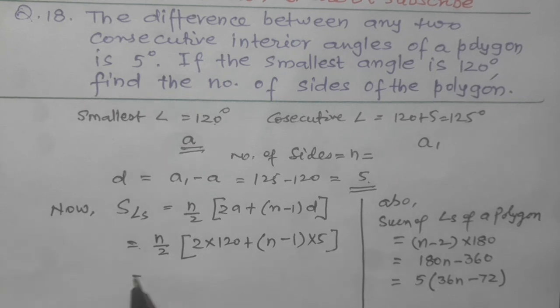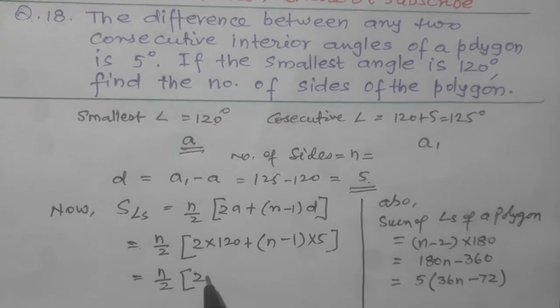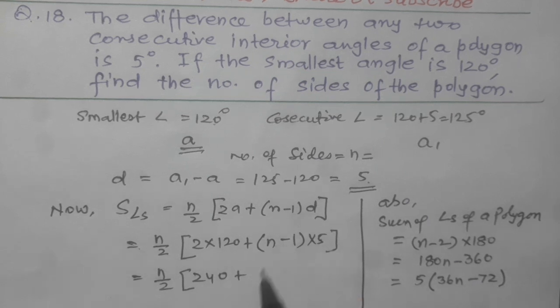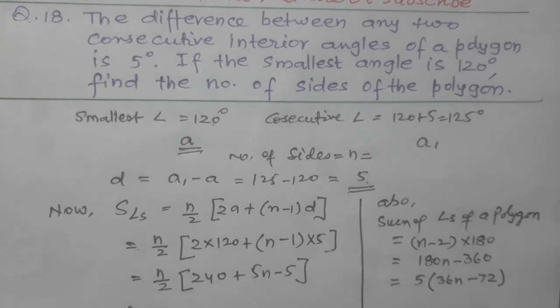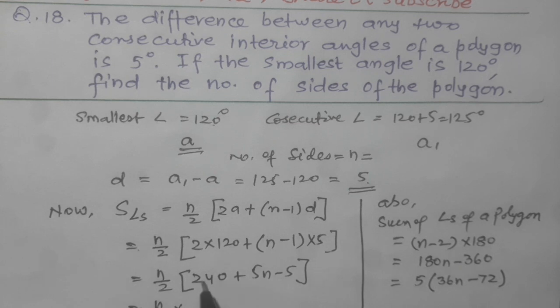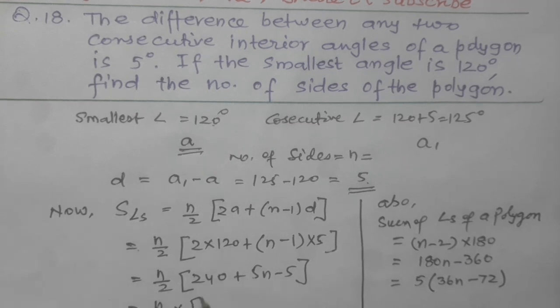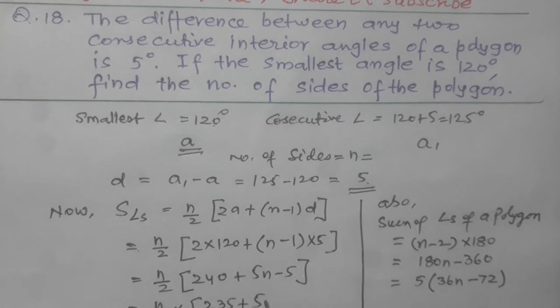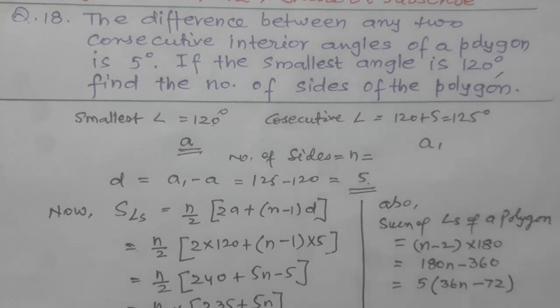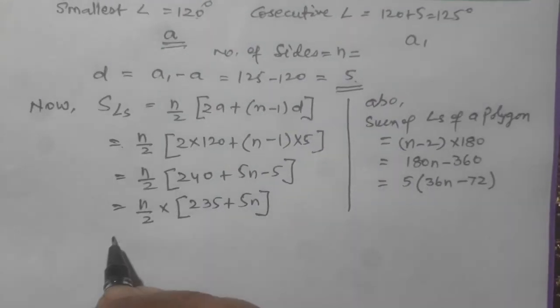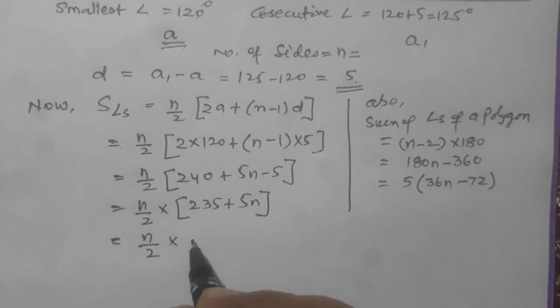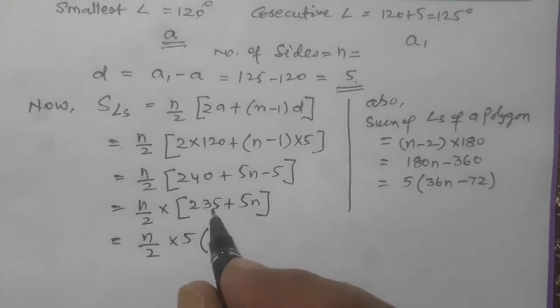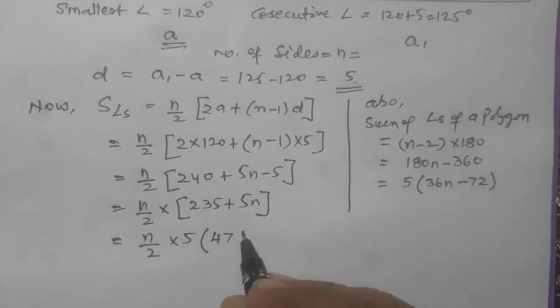So N by 2 into 240 plus 5N minus 5 equals N by 2. Again, we shall take it as 240 minus 5, 235 plus 5N. This side we shall keep as it is. So it will be N by 2, 5 we shall take common, so it will be 5 here, 47 plus N.